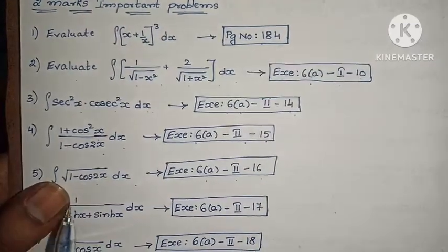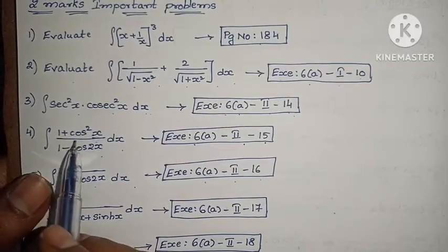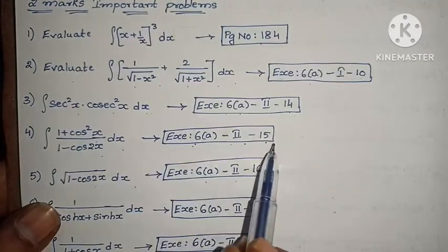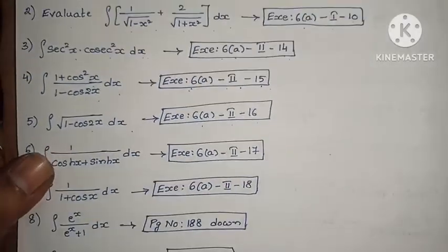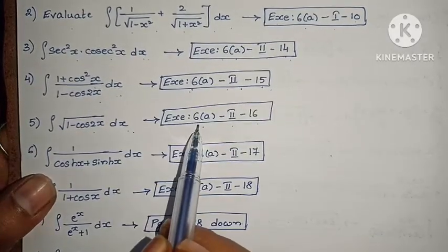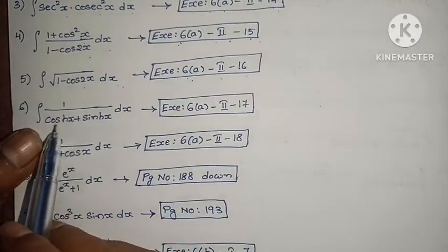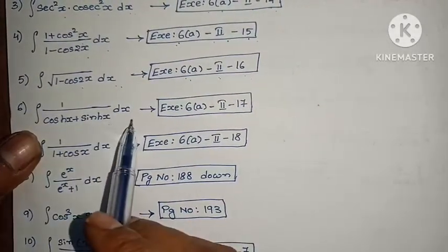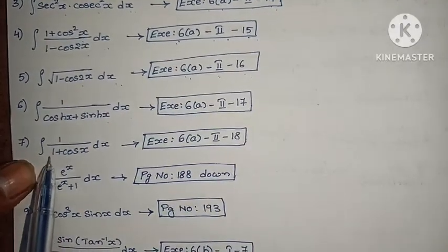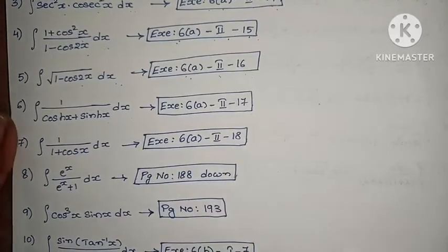Note that 'evaluate' is written before these questions normally. 14th problem: integral of (1 + cos²x)/(1 − cos2x) dx, exercise 6a, Roman numeral 2. 15th problem: integral of √(1 − cos2x) dx, exercise 6a, Roman numeral 2. 16th problem: integral of 1/(cosh x + sinh x) dx, exercise 6a, Roman numeral 2. 17th problem: integral of 1/(1 + cos x) dx, exercise 6a.